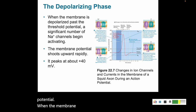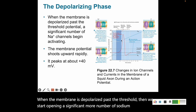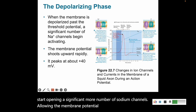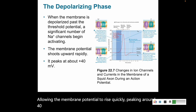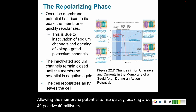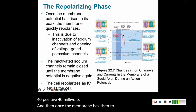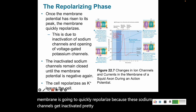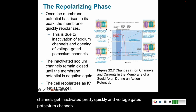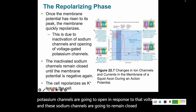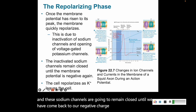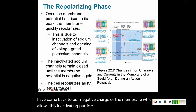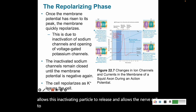When the membrane is depolarized past the threshold, a significantly larger number of sodium channels open, allowing the membrane potential to rise quickly and peak around positive 40 millivolts. Once it reaches its peak, the membrane quickly repolarizes as the sodium channels become inactivated and voltage-gated potassium channels open. The sodium channels remain closed until the membrane returns to its negative charge, which releases the inactivating particle and allows the nerve cell to be excitable again.